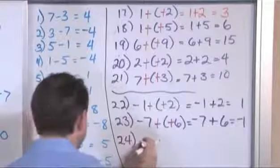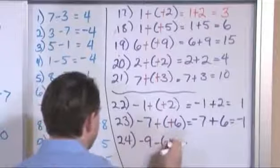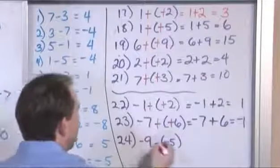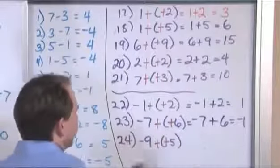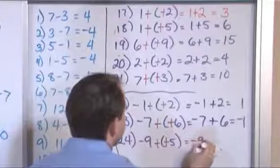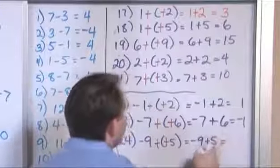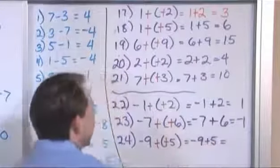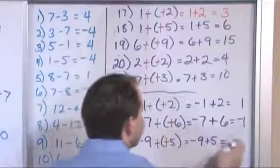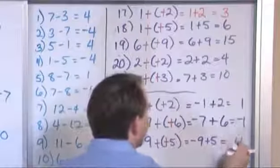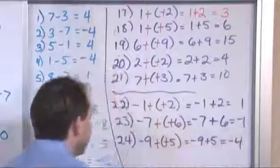Problem 24: negative 9 minus negative 5. We're going to add the opposite here, because those negatives are right next to each other, and we're going to have negative 9 plus 5. Adding these with opposite signs, we're going to end up subtracting — 9 minus 5 gives us 4, and the sign comes from the larger absolute value, so we have negative 4.